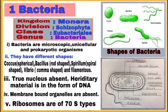Third point: true nucleus is absent and hereditary material is in the form of DNA. Next, membrane-bound organelles are absent and ribosomes present in it are of the 70S type. The 'S' stands for Svedberg unit, which is used to measure how fast molecules move in a centrifuge.